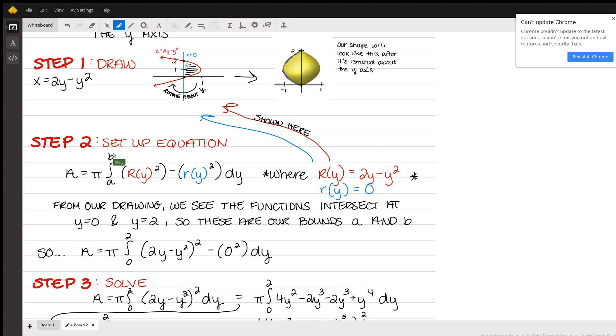So that gives us this equation area is equal to pi, the bounds of integration of big R of y squared minus little r of y squared dy, where this quote unquote big R of y is our function on the right, our outermost function in this solid, 2y minus y squared. And our little r of y is this innermost function to the left, x equals 0.